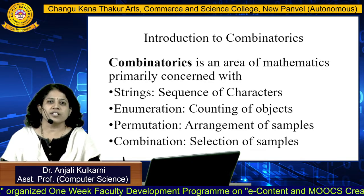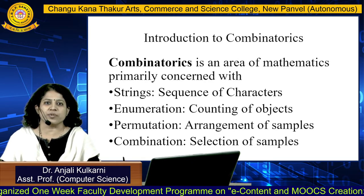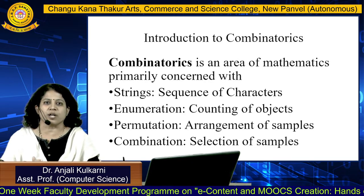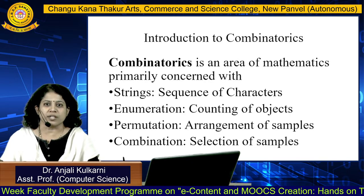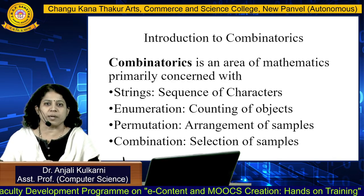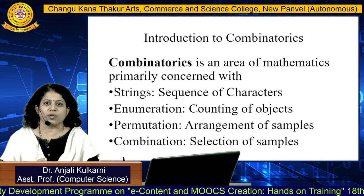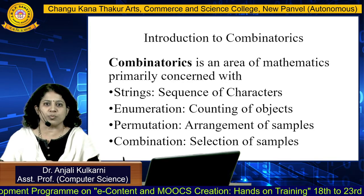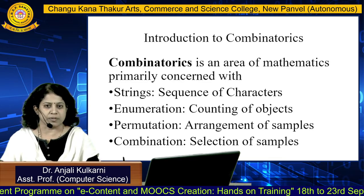What is actually strings? Strings are a sequence of characters. Enumeration means counting of objects. Permutation means arrangement of samples and combination means selection of samples out of the total samples.